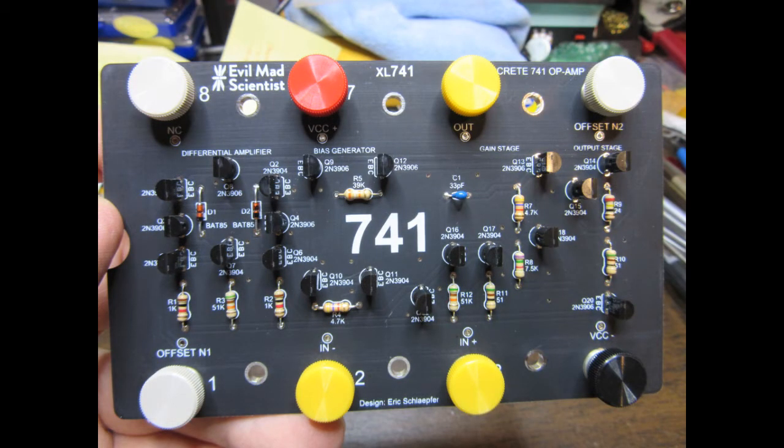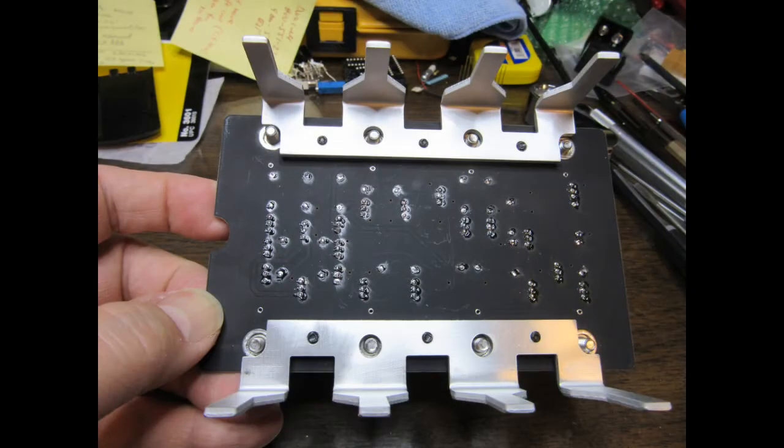Finally, the 8 color-coded thumb screws are threaded into fittings on the circuit board, and the aluminum stand with its insulating spacers is mounted to the board.